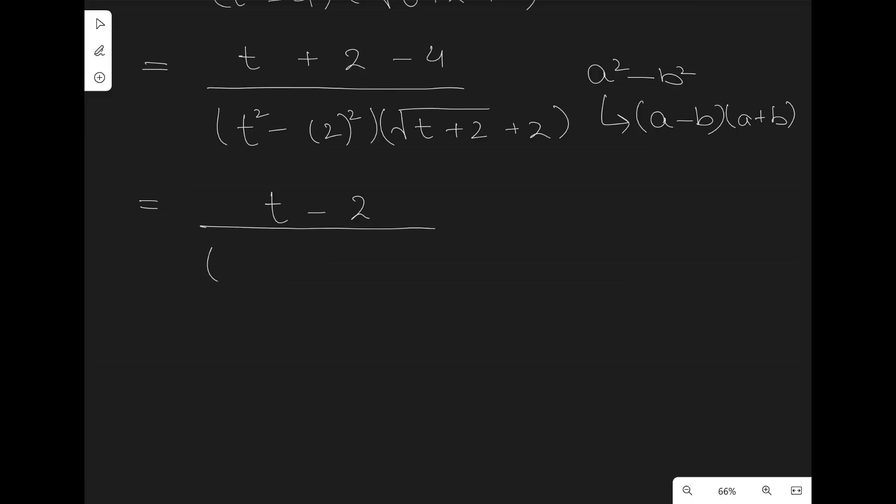it's again a² - b², so it's (a-b), that is (t-2) times (a+b), (t+2), multiplied by the same term as above.